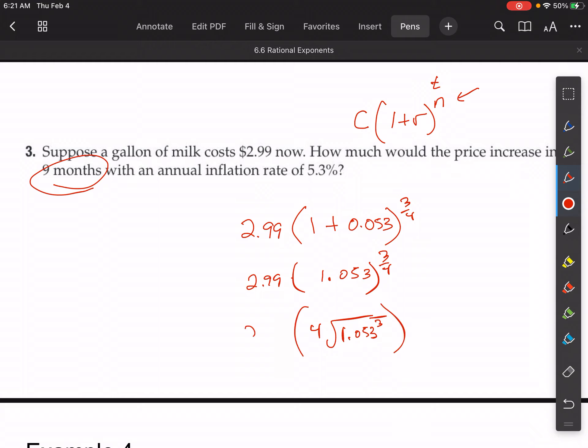And multiply that thing by 2.99. And when I do that, I end up with 3.108.